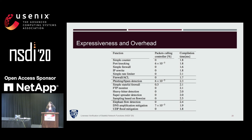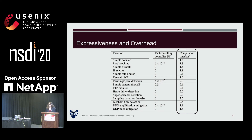To test the expressiveness of our abstraction and measure the overhead of the compiled code, we implemented a large set of functions as shown. In our experiments, we replay a packet trace from a university data center with over 100,000 packets and 1,800 IP addresses for these functions, and we measure the frequency of controller calls. This overhead is modest for all functions, between 0 and 0.3%, and compilation time for all functions is within a few milliseconds.